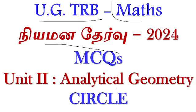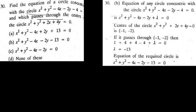I am going to do an analytical geometry circle MCQ. Find the equation of a circle concentric with the circle x squared plus y squared minus 4x minus 2y minus 4 equal to 0, under which it passes through the center of the circle x squared plus y squared plus 2x plus 4y equal to 0.